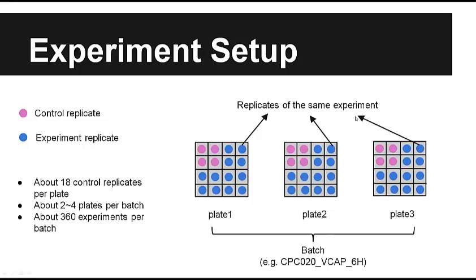For one experiment, it will have the same number of replicates as the number of plates, and the replicates of the same experiment will be placed on the same well of each plate. Here are some statistics: it's about 80 control replicates per plate, and generally there are two to four plates per batch, so generally each experiment will have two to four replicates. There will be about 360 experiments per plate, because you subtract 384 by the number of control replicates.